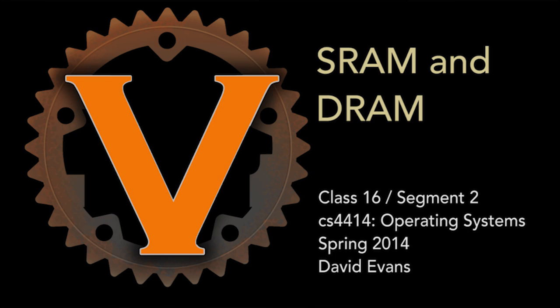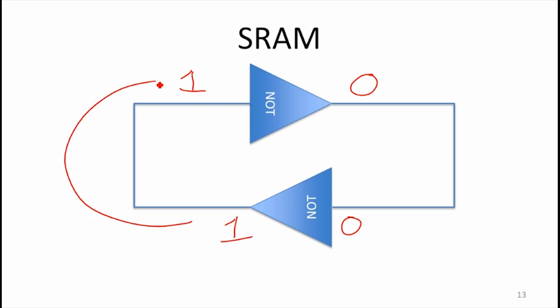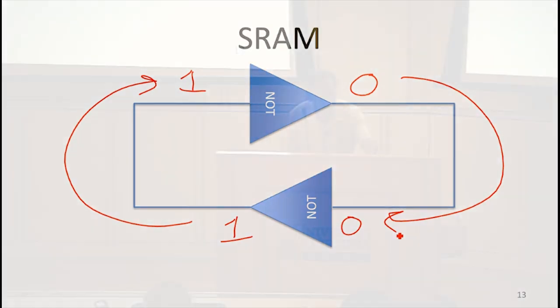SRAM is sort of a misleading name. The idea is you make some circuit that is stable because you've got things connected in such a way. If our value is a 1, that goes through the NOT gate, becomes a 0, and then it's still a 0 — doesn't change in the wire — goes through the NOT gate, becomes a 1. In a lot of ways it's similar to a delay line, but now we're talking about electrons traveling at roughly a third of the speed of light in copper wires.